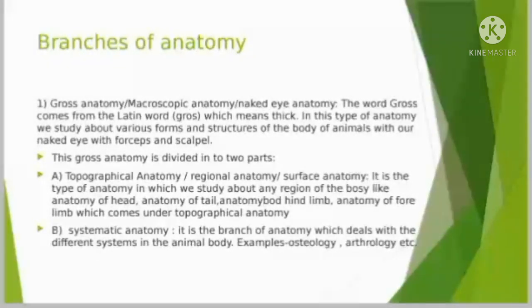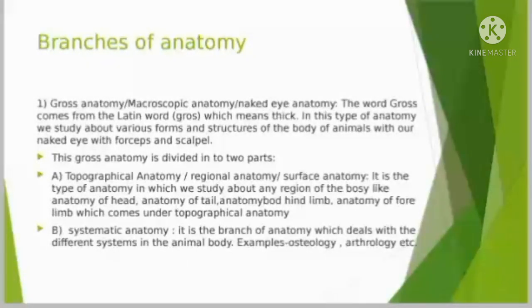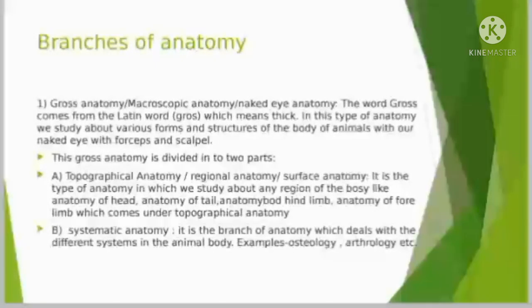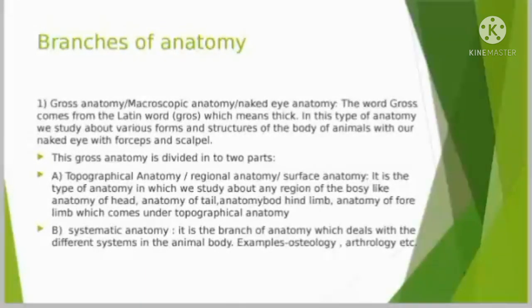The second part is systematic anatomy. In this type of anatomy, we deal with the different systems in the animal's body. For example, osteology deals with the bones. Systematic anatomy is divided into seven parts: osteology, arthrology, myology, splanchnology, angiology, neurology, and esthesiology.